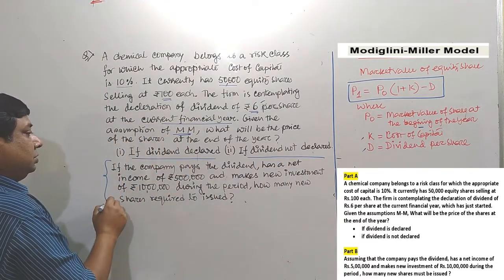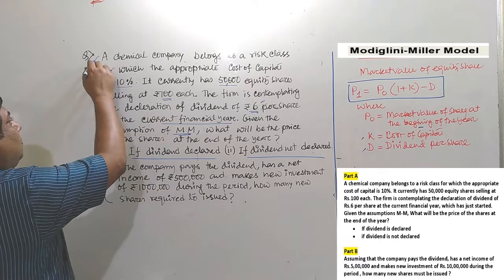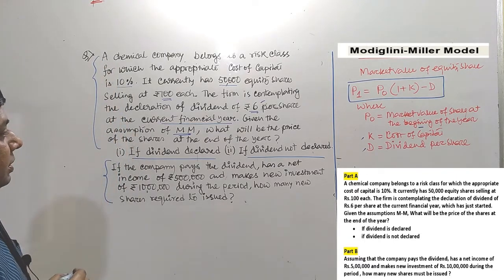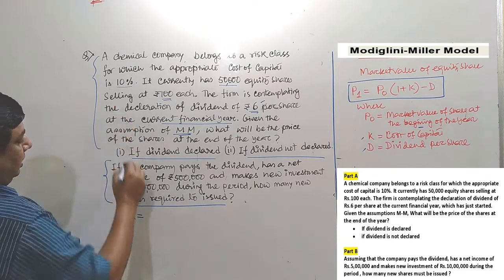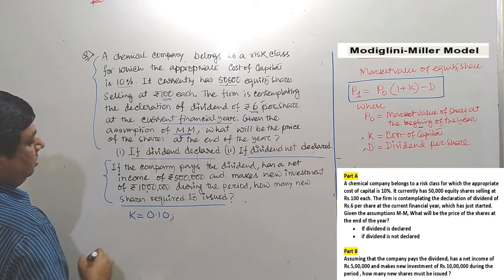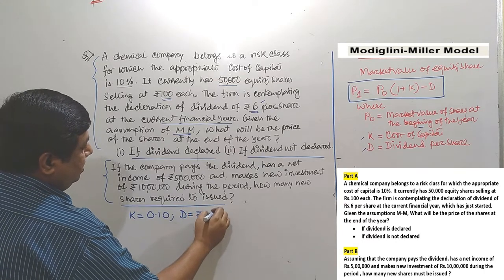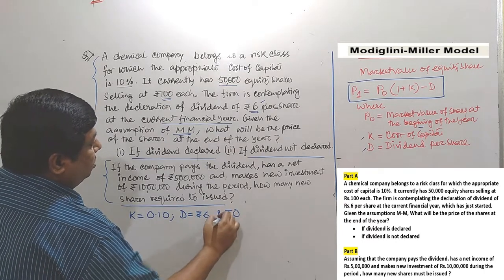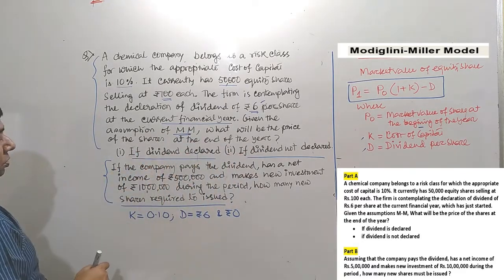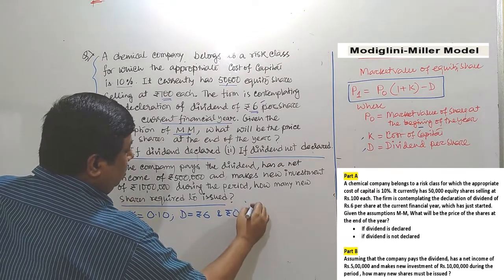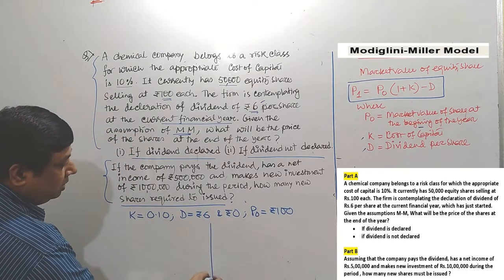There is another part of the question that I will explain later. First, we are going to solve the first part. Let us plot the data: cost of capital K is 10%, or 0.10. Dividend D is Rs.6 when declared, or Rs.0 when not declared — two options to calculate. Market price per share P0 is Rs.100.